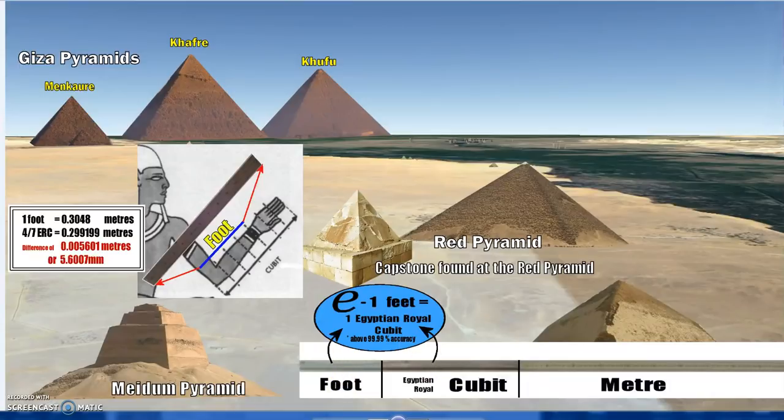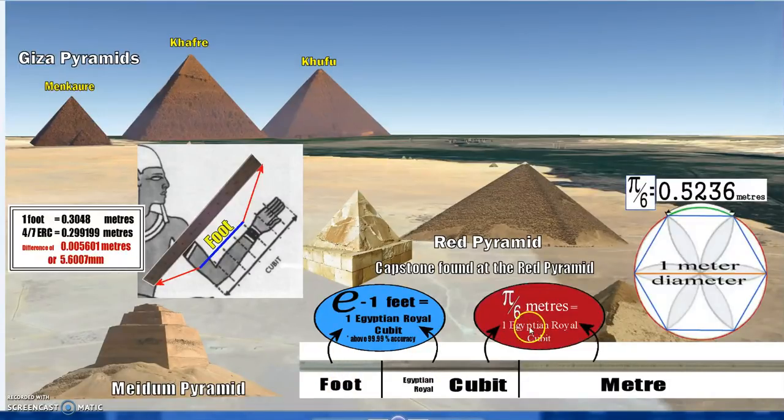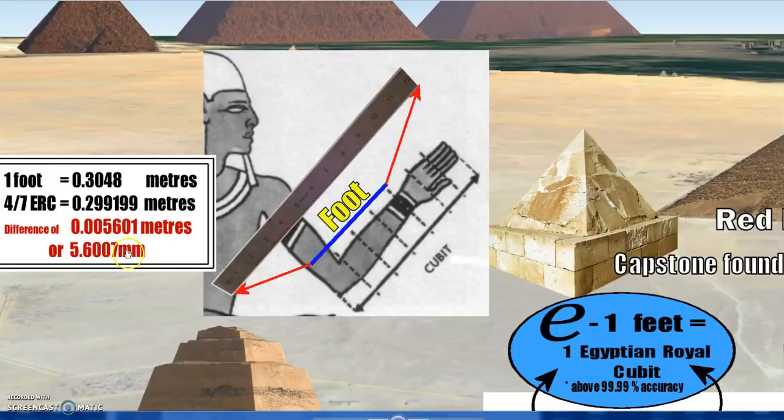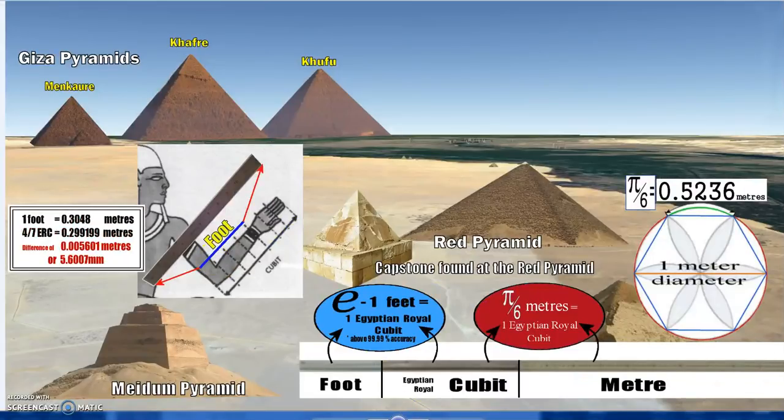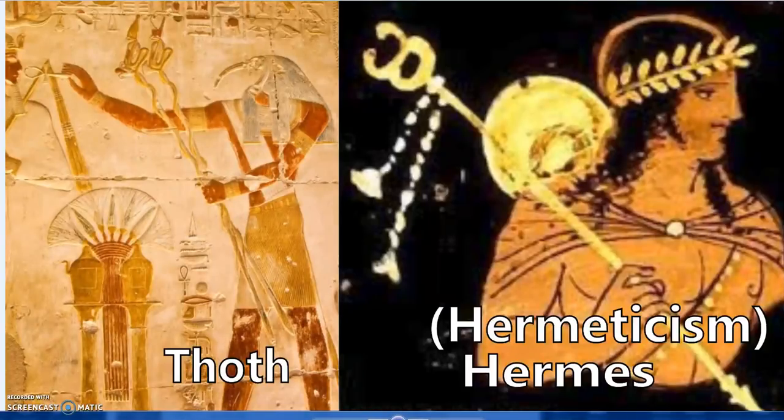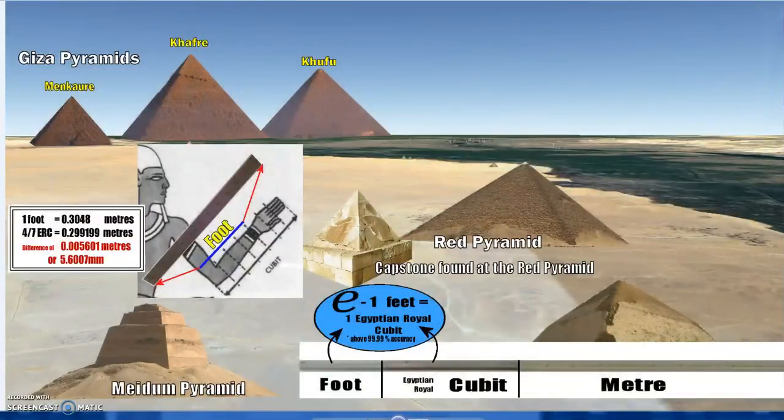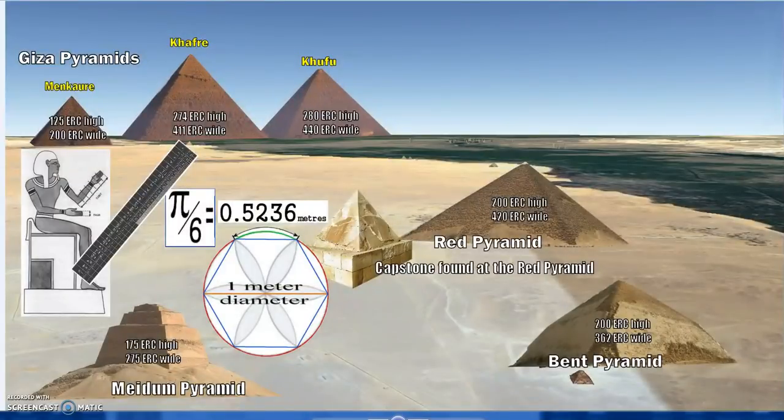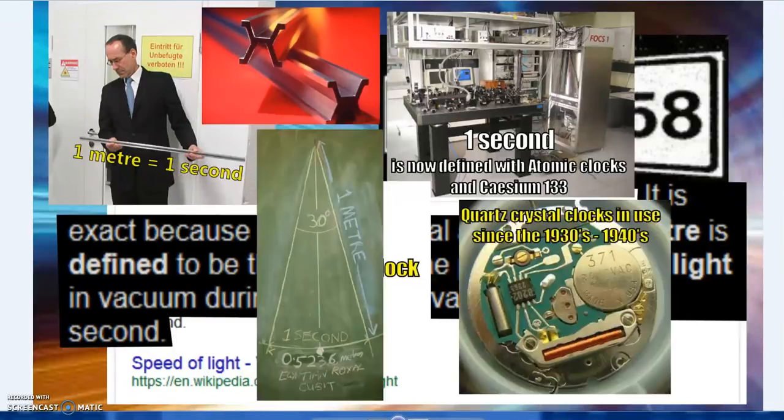So e minus 1 feet equals one cubit. And then we have this π over 6 meters equals one cubit. And recent video, okay, now that's something else. But yeah, so that's just an example of, well, Hermes, Hermeticism, wisdom of both.